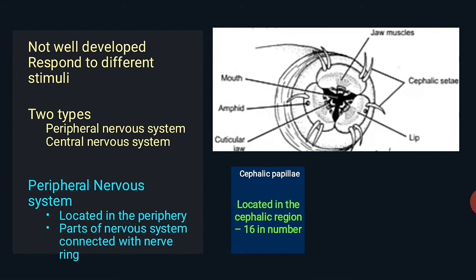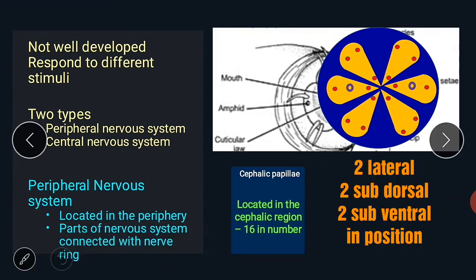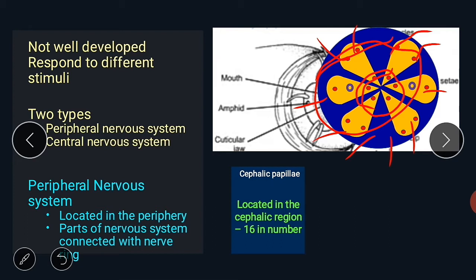Cephalic papillae are located in the cephalic region. They are 16 in number. Let's explain how it is 16 — there are six at the front, and counting further: 7, 8, 9, 10, 11, 12, 13, 14, 15, 16 — totaling 16. The amphids, shown in violet color, are a pair present on either side.